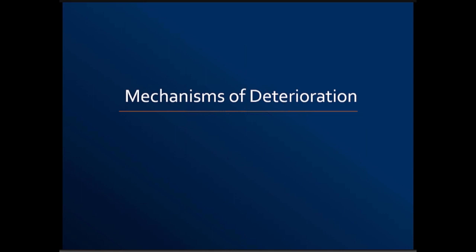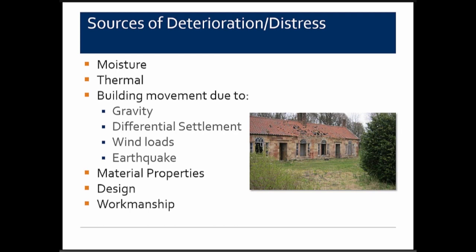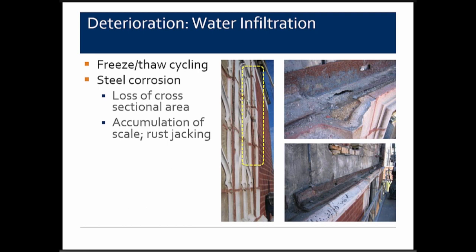There are several sources of deterioration or distress that terracotta can experience, somewhat like other clay products: moisture, thermal effects, building movement due to gravity and differential settlement, wind loads, natural building movement, earthquake movement, material properties, system design, and workmanship — including how things are installed, anchored, backfilled, and incorporated into the wall system.